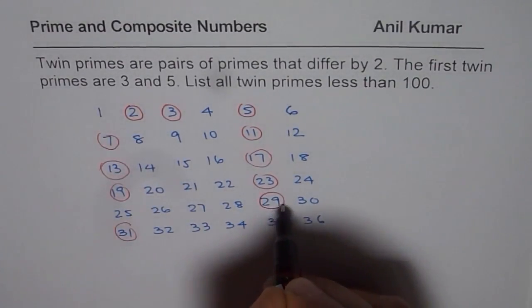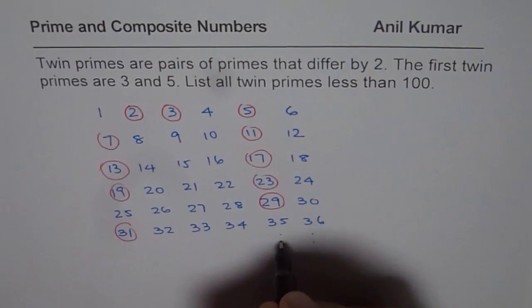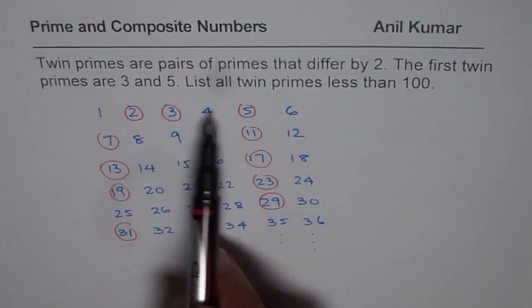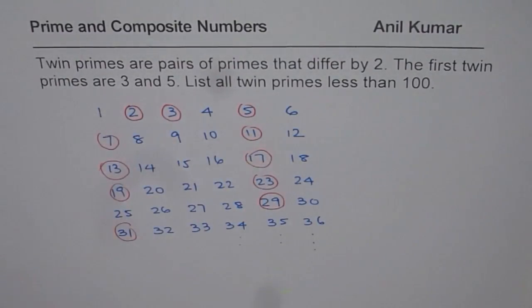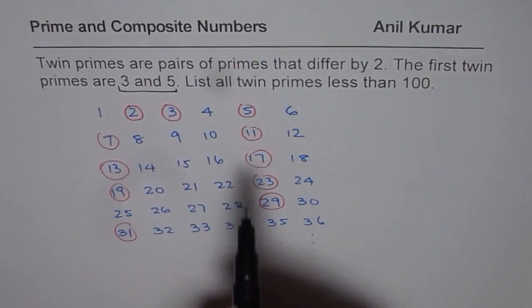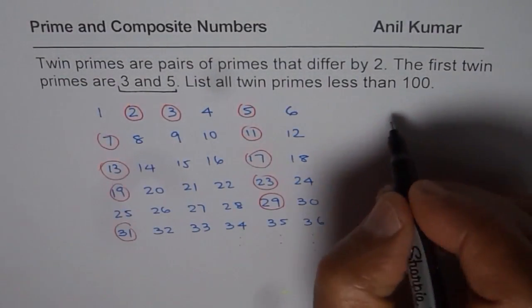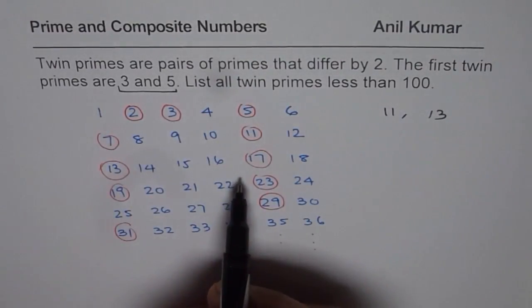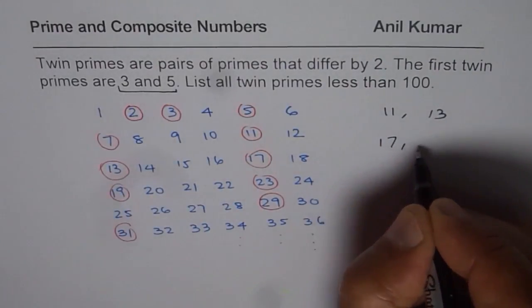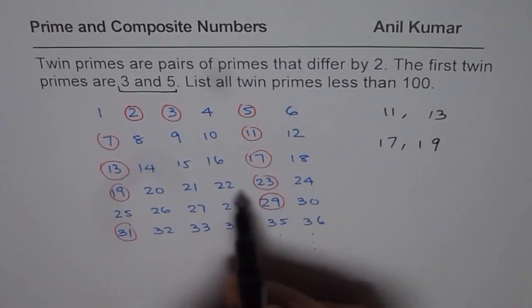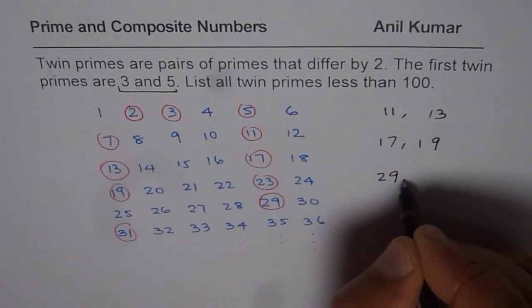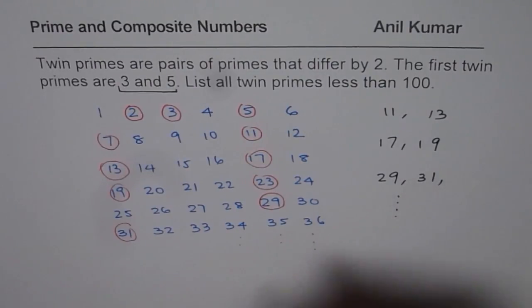In this case 29 is a prime number and then you can continue the list. Now from here you can see 3 and 5 is your first twin prime which is already given to us. So we are given 3 and 5. Now the others are 11 and 13, so we have 11, 13, 17, 19, so we have 17 and 19, 23, 25 is not a prime, however 29, 31, so we have 29 and 31 and so on.